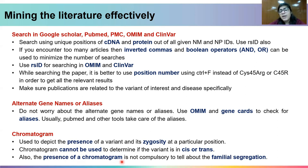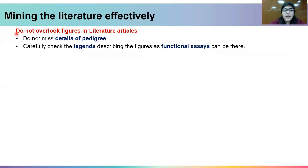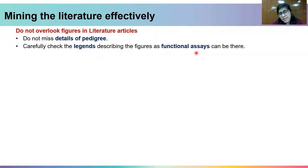The presence of a chromatogram is not compulsory to determine familial segregation. For that, you need to scan the text for terms such as homozygous, heterozygous, or compound heterozygous to see whether familial segregation is present and whether the parents have been genotyped. One should also not overlook figures in the literature articles — for example, pedigree details, because segregation is often very clearly shown in the pedigree. Figure legends are also very important, as they can tell you whether the functional assay shown is statistically significant, potentially saving a lot of time.